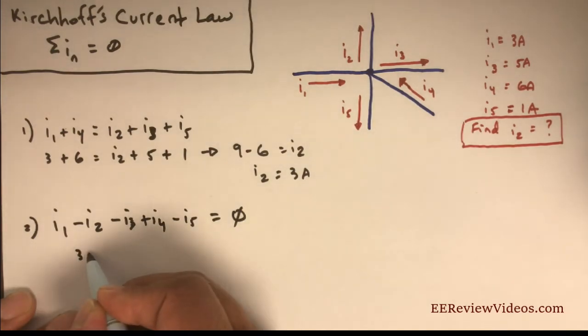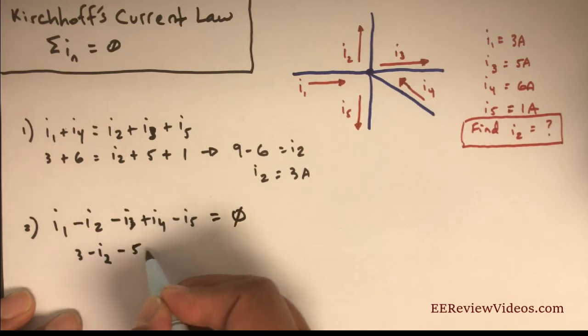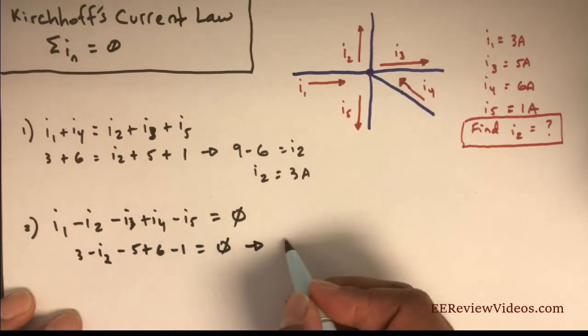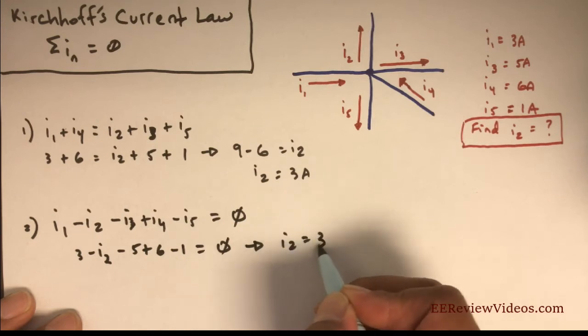We can put those numbers in here: 3 amps minus I2 minus 5 plus 6 minus 1 equals zero. Doing some algebra, you're left with I2 equals 3 amps.